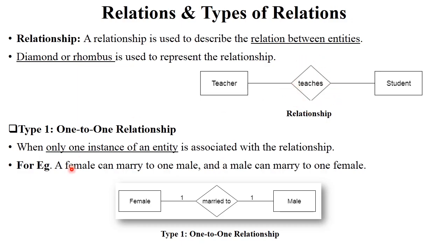The first type is one-to-one relationship. In a one-to-one relationship there is only one instance of an entity on both the left and right side. For example, female married to male — one female can marry one male, or one male can marry one female. This is called a one-to-one relationship, and the diamond shape denotes the relationship.